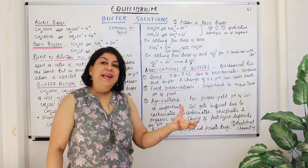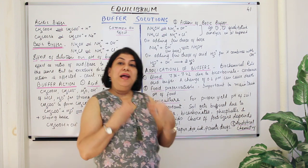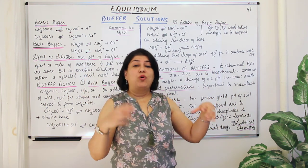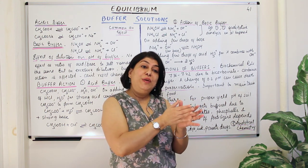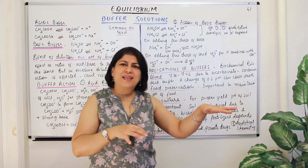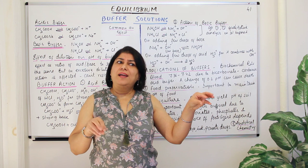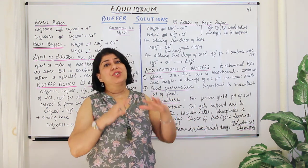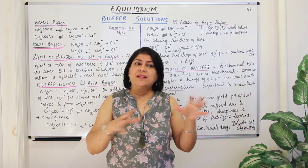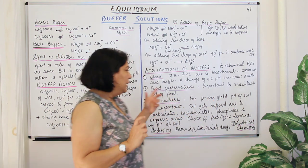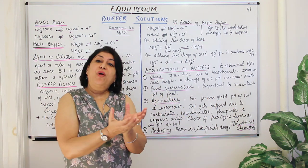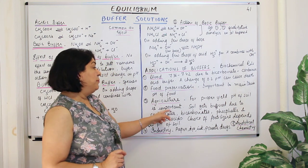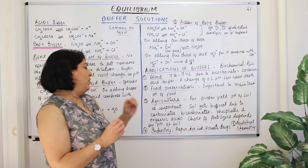In agriculture, soil has a particular pH. Just as blood must be at a certain pH or the organism dies, plants also need the water and salts travelling through them to be at a certain pH. If the soil is too acidic or too basic, only certain crops suitable for that condition will grow. In extreme acidic or basic conditions, no plant grows and the land becomes barren.